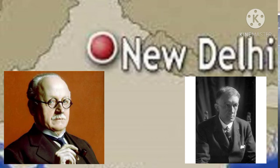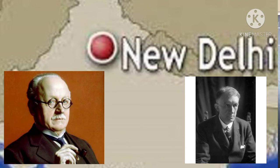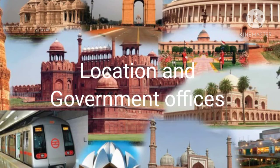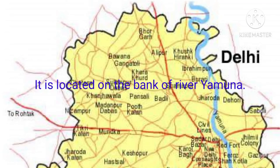After the Mughal Emperors, when British rule came to India, the British developed New Delhi as the capital of India. So now this New Delhi is our national capital. Delhi is located on the bank of the river Yamuna — it is located on the bank of the river Yamuna.